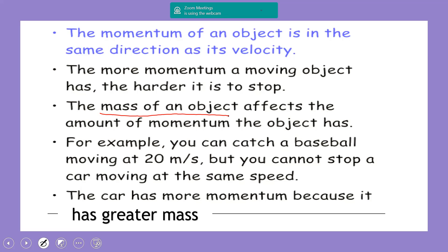Let's repeat: momentum is a characteristic of a moving object. Its unit is kilogram meters per second. It depends on the mass and the velocity, and the direction of the momentum is the same as the direction of the velocity.